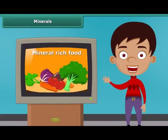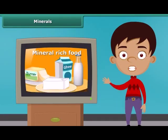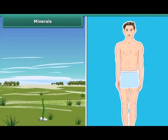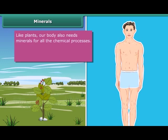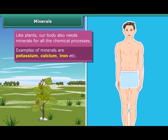You might have seen many advertisements of mineral-rich food items. Now let's know why they are so important. Actually, plants need minerals for growth. Besides this, a body also requires minerals in small quantities for all chemical processes. Potassium, calcium, iron, etc. are some common examples of these minerals. Let us know more about the sources and the role of these minerals using the next table.